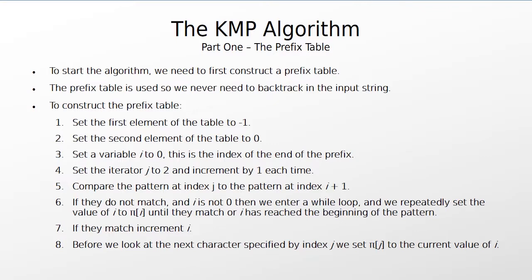To construct the prefix table, set the first element of the table to minus 1 and the second element to 0. Set a variable i to 0, which is the index of the end of the prefix. Set the iterator j to 2 and increment by 1 each time. Compare the pattern at index j to the pattern at index i plus 1. If they do not match and i is not 0, then we enter a while loop and repeatedly set the value of i to pi[i] until they match or i has reached the beginning of the pattern. If they match, increment i. Before we look at the next character specified by index j, we set pi[j] to the current value of i. It is worth noting that the prefix and suffix can overlap.